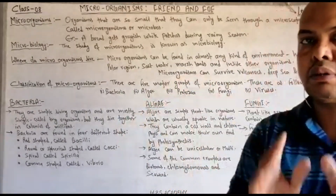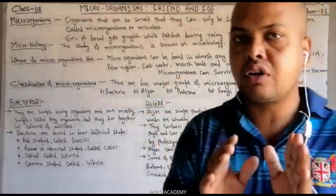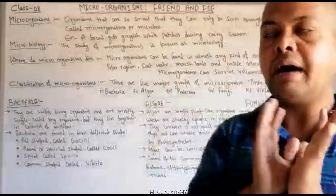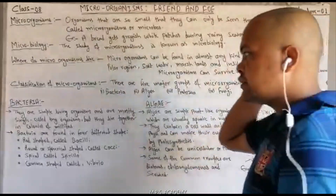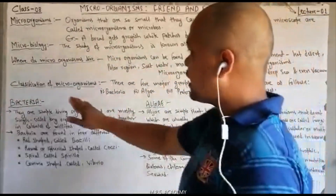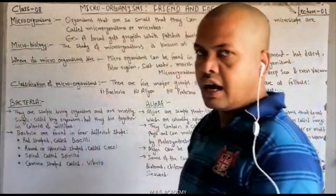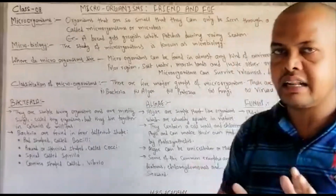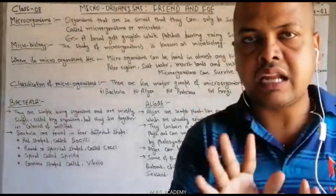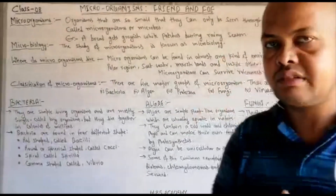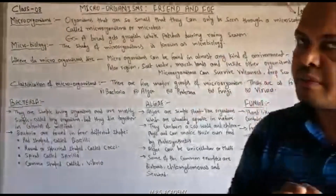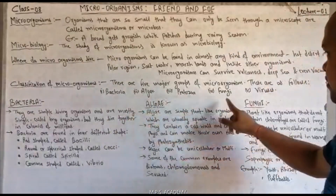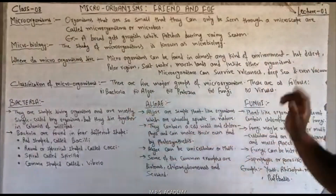Now, next: classification of micro-organisms. Agar hum micro-organisms ko classify karein, to mainly 5 types ke micro-organisms hote hain. The 5 types are: bacteria, algae, protozoa, fungi, and virus.